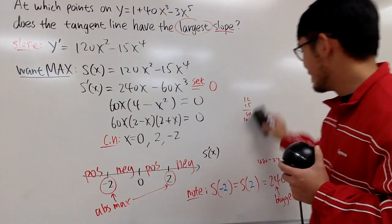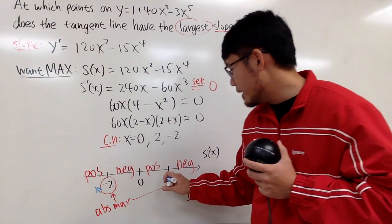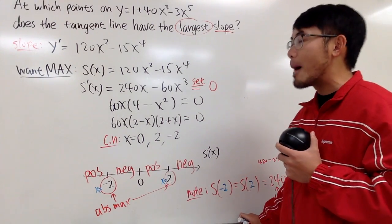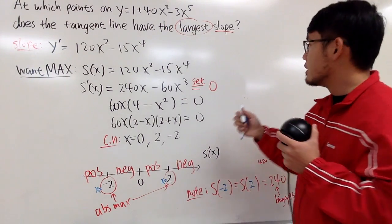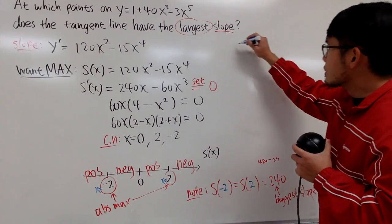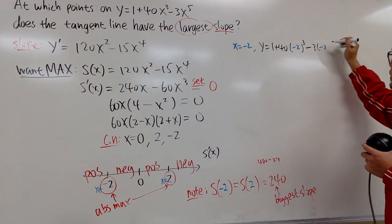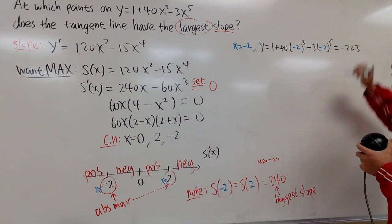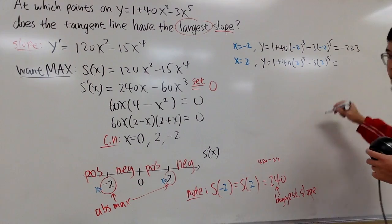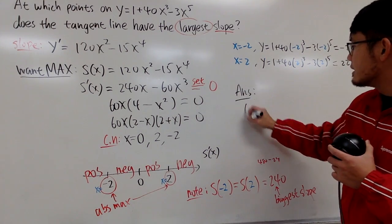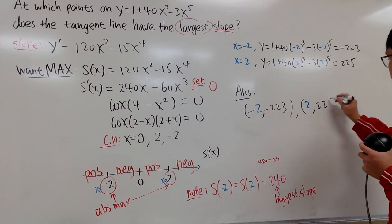But this gives only the x values: x = -2 and x = 2. The question asks for the points on the curve, so we must refer back to the original equation. When x = -2: y = 1 + 40(-2)³ - 3(-2)⁵ = 1 - 320 + 96 = -223. When x = 2: y = 1 + 40(2)³ - 3(2)⁵ = 1 + 320 - 96 = 225. So the two points are (-2, -223) and (2, 225).